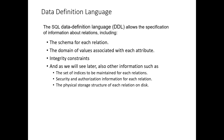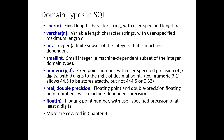Coming to the Data Definition Language: SQL DDL allows the specification of information about relations, including the schema of each relation — where relation means a table and schema means the heading of the table — the domain of values associated with each attribute, and integrity constraints. It also covers other information such as the set of indices to be maintained for each relation, security and authorization information, and the physical storage structure of each relation on disk.